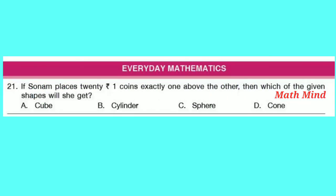Everyday Mathematics. Question number 21: If Sonam places 20 one-rupee coins exactly one above the other, which shape will it resemble? Placing one-rupee coins one above the other, we get a cylinder. So the correct option is B — a cylindrical shape.